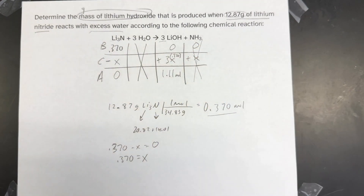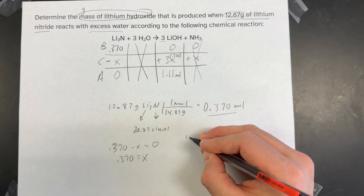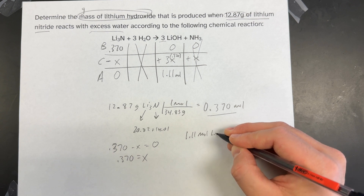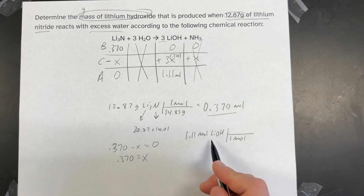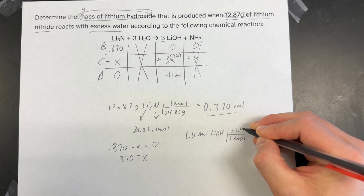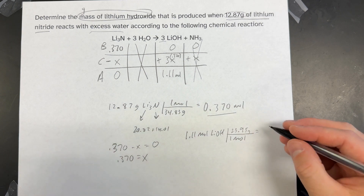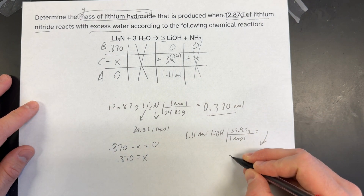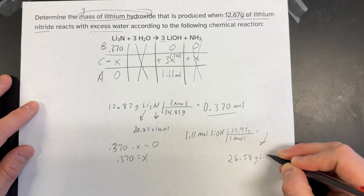Remember, the only number you can get from the table is moles, so I take 1.11 moles of lithium hydroxide and convert it to grams. Finding the molar mass of LiOH: lithium is 6.94, oxygen is 16, and hydrogen is 1.01, giving a molar mass of 23.95 grams per mole. Multiplying 23.95 by 1.11 gives a total of 26.58 grams of lithium hydroxide.